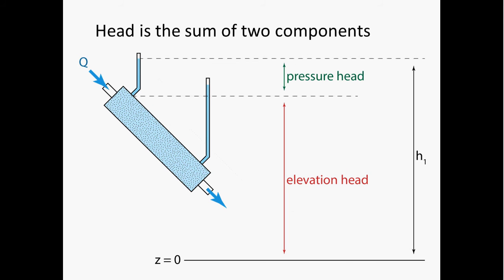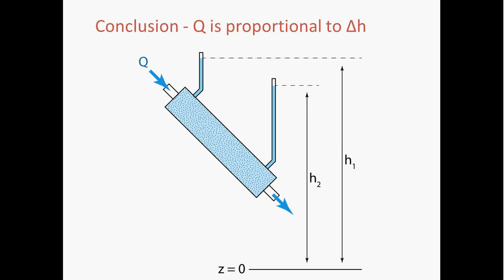Hydraulic head is the sum of two components: the height that water rises in the tube as a result of water pressure — called pressure head — and the height the water has because of how far the tube is above the datum, called elevation head. What Darcy observed was that water always flows from high head to low head, and that the rate of flow is proportional to the difference in hydraulic head between the manometers — that is, delta H.